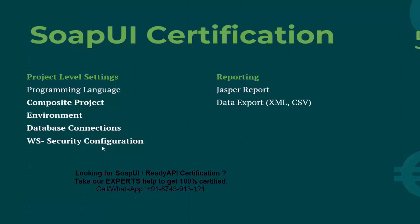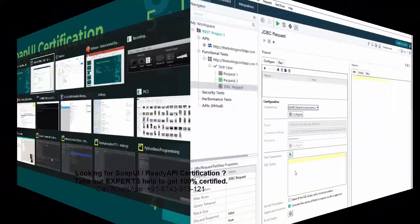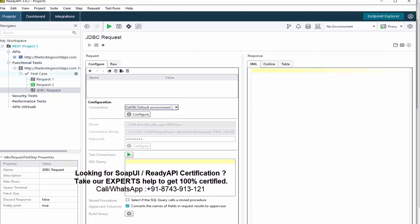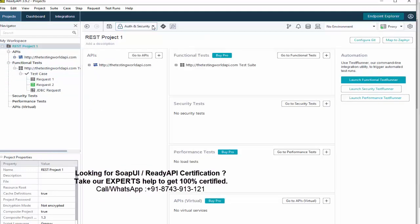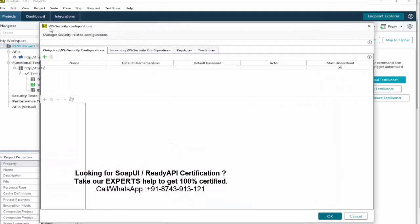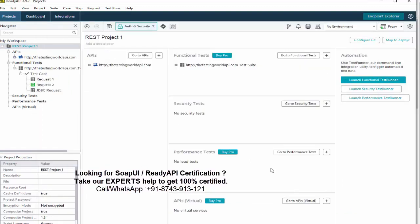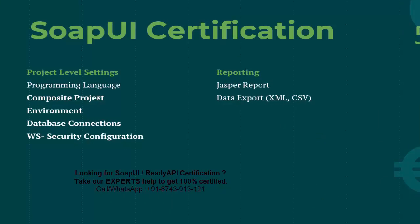Next is WS Security configuration. When making a request or receiving a response, it may require encryption and decryption, which is handled via security configuration. Remember: whenever you get security-related questions, always try to select the option related to WS Security configuration. You can check it at the project level under WS Config, where you can set WS security configurations. I'm not going to cover every detail — only what is important for certification.